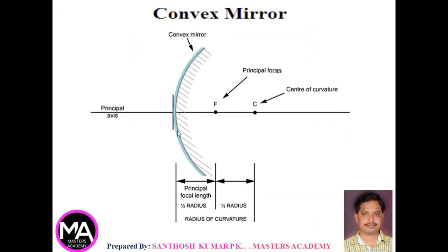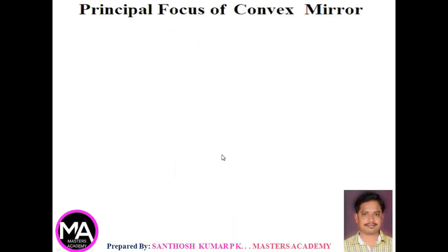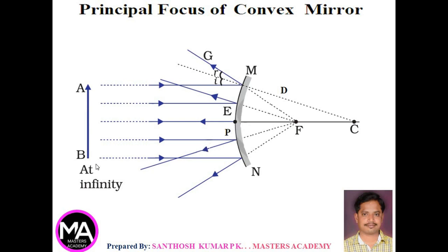Next, convex mirror. A convex mirror is also known as a diverging mirror. The principal focus and center of curvature are towards the right side of the mirror. The focal length is always equal to half of the radius of curvature for both concave and convex mirrors. Whenever an object is at infinity, the rays coming are parallel rays. After reflection from the mirror, they will diverge — that is why it is known as a diverging mirror.